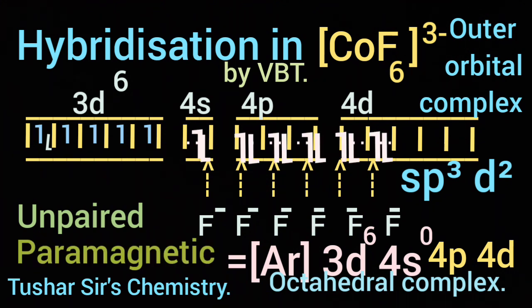As 3d contains 4 unpaired electrons, it is paramagnetic. As there are 4 unpaired electrons, it is a high spin complex.